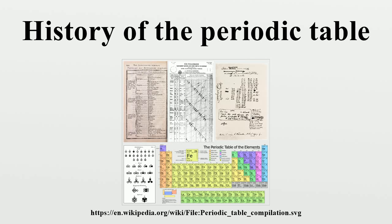Some of the triads that were classified by Döbereiner are chlorine, bromine, and iodine; calcium, strontium, and barium; sulfur, selenium, and tellurium; lithium, sodium, and potassium.